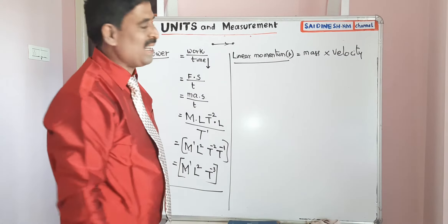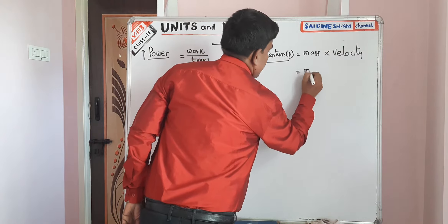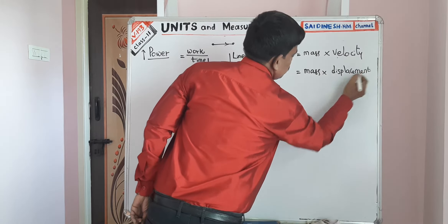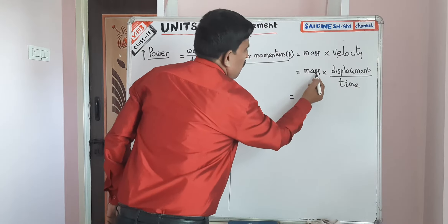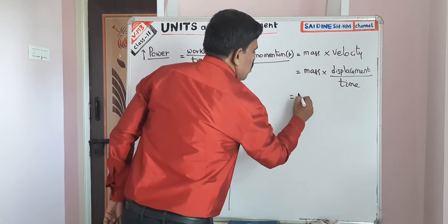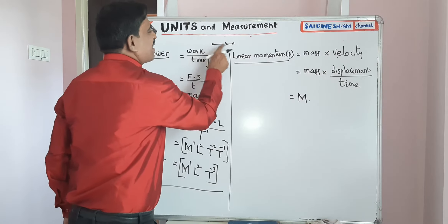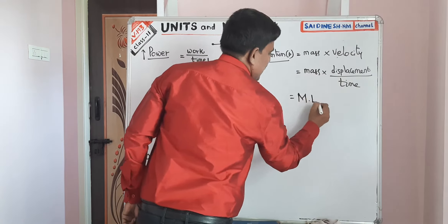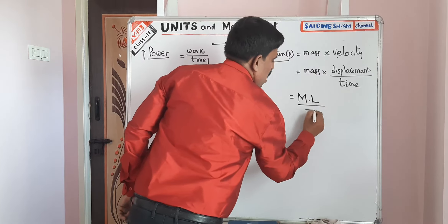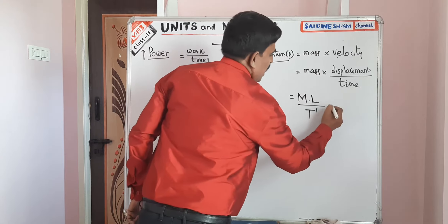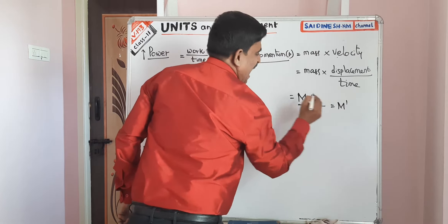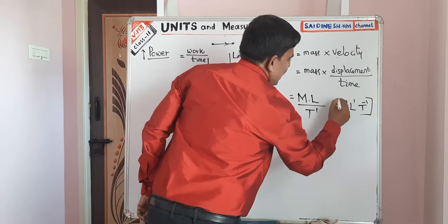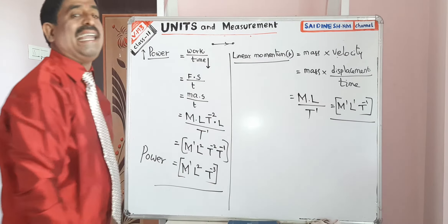Mass into velocity. Velocity means displacement by time taken. Mass is the fundamental quantity. Displacement is the shortest distance between two points — nothing but length only. So we write: M power 1, L power 1, T power plus 1 comes to numerator giving T power minus 1. This is the dimensional formula of linear momentum: M L T power minus 1.